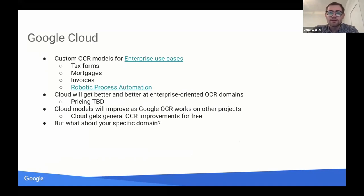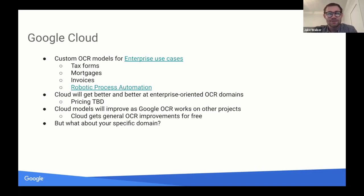Cloud is the mechanism by which Google OCR exposes itself to the world — through the Google Cloud Vision API. Cloud really cares about enterprise use cases, so they're putting a lot of effort and data into tax forms, mortgages, invoices, and similar enterprise-focused things. It's not clear that this will benefit libraries, archives, and museums, because the pricing will probably be higher than desired, and those institutions mostly care about historical documents rather than invoices and mortgages. Cloud will continue to improve as the research team improves, but there won't be any specific work targeting historical documents.